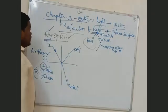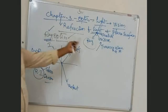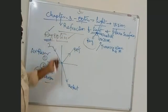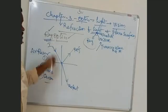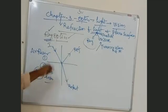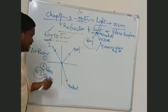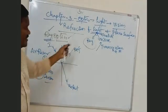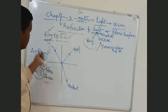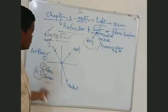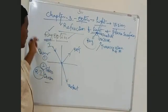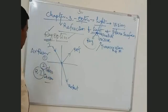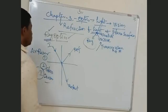To summarize: refraction is the process where light travels from one medium to another. Reflection is when light comes back into the same medium. Both of these occur at the boundary where the light is incident.